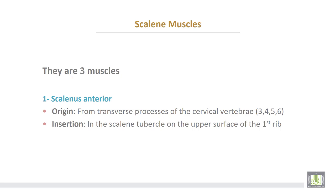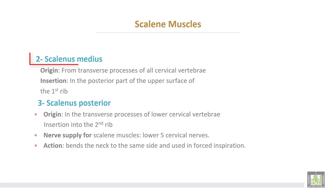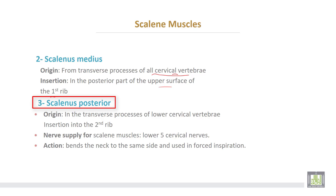Scalene muscles — we have three. Scalene anterior takes origin from the transverse processes of cervical vertebrae from C3 to C6, with insertion into the scalene tubercle on the upper surface of the first rib. Scalene medius takes origin from the transverse processes of cervical vertebrae, inserting into the posterior part of the upper surface of the first rib. Scalene posterior takes origin from the transverse processes of the lower cervical vertebrae and inserts into the second rib. Nerve supply from the lower five cervical nerves. Action: bends the neck to the same side and assists in forced inspiration.